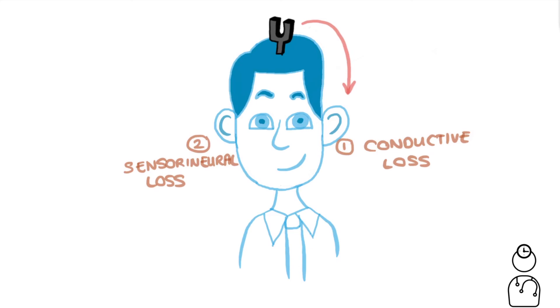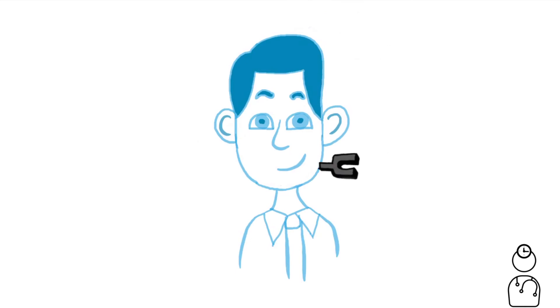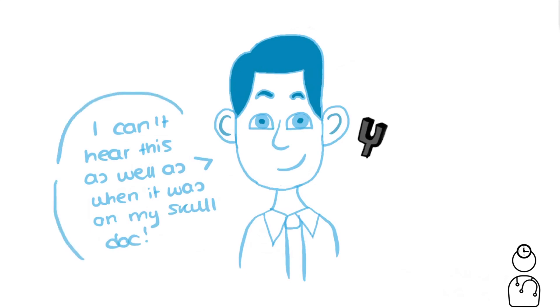Now we can do the Rinne's test. So we need to take the tuning fork, place it on Bob's mastoid process, ask him when he can stop hearing it and then place it next to his ear. Since Bob is saying that the sound was louder when it was on his mastoid process than when it's next to his ear, it means that bone conduction is better than air conduction, meaning there's a conductive hearing loss in this ear.